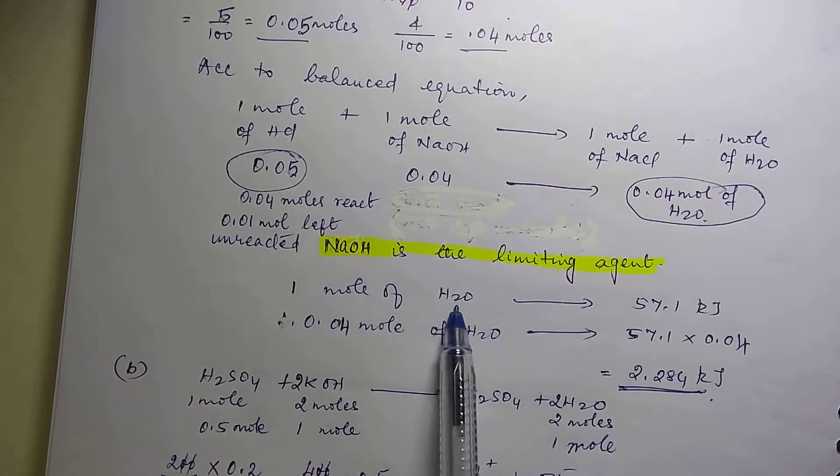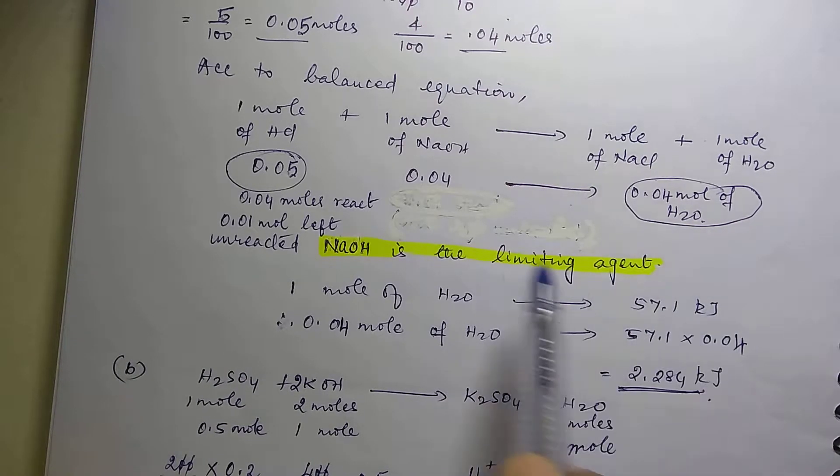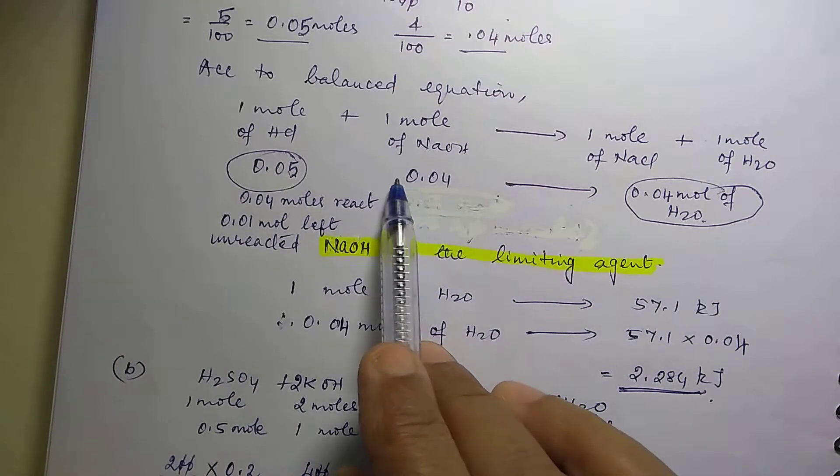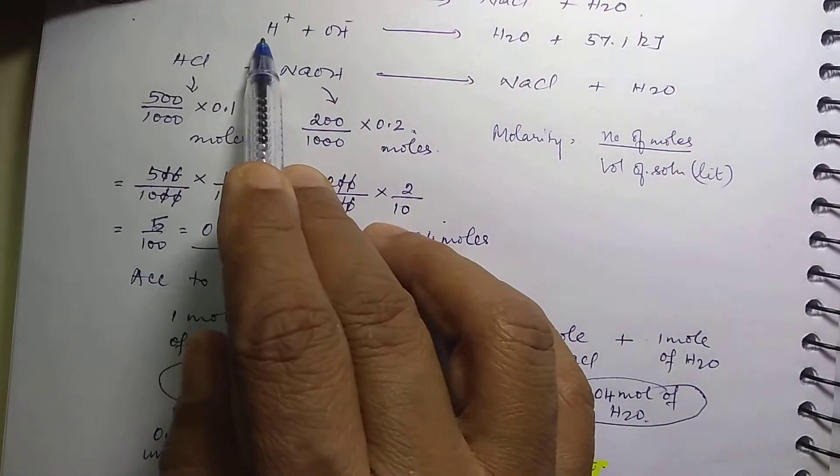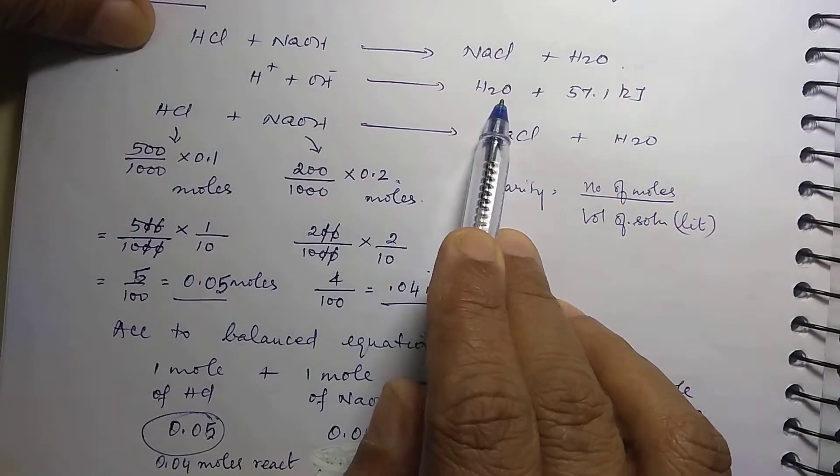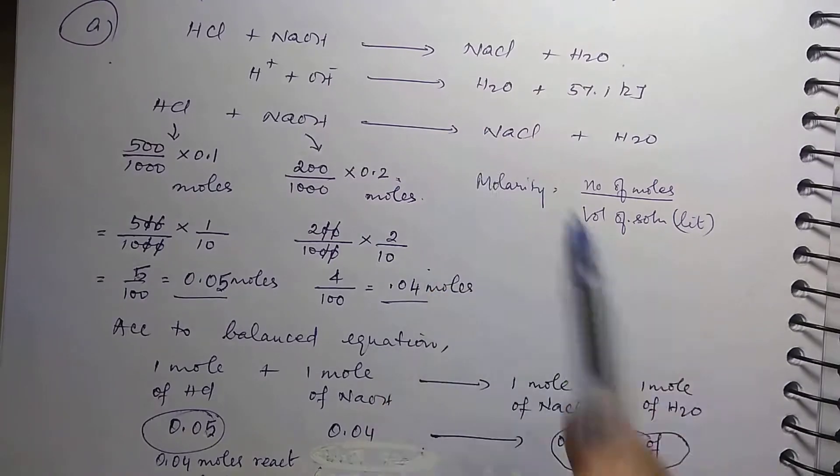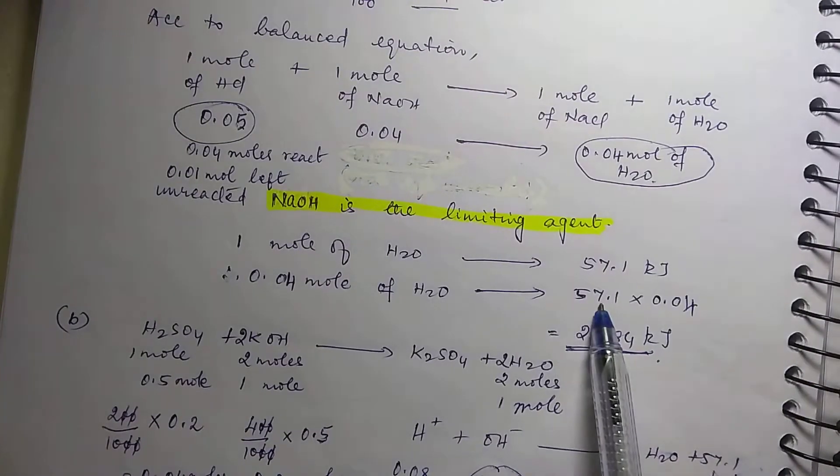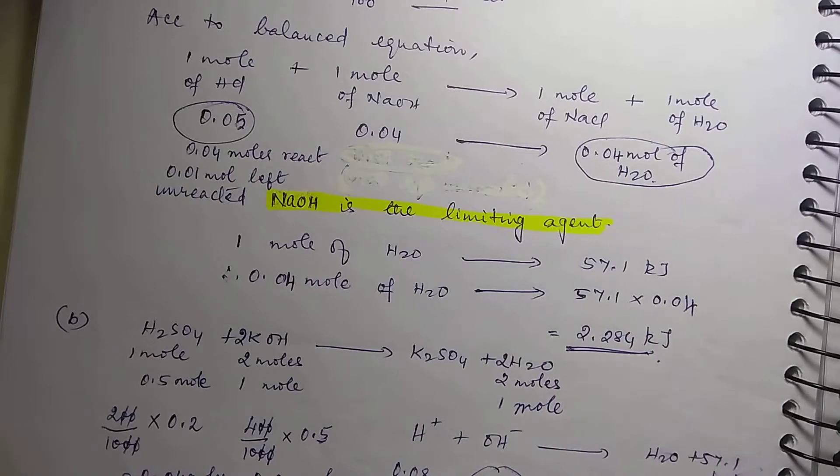Now, for the formation of 1 mole of water, this many kilojoules of energy is released. How many moles are combining? 0.04 moles. So here we saw 1 mole of this and 1 mole of this is giving you 1 mole of water. So if this is 0.04, this will also be 0.04. So 57.1 times 0.04 will give you this many kilojoules of energy released.